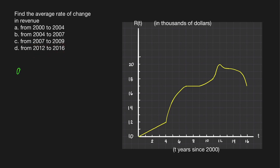Let's find the revenue from 2000 to 2004. Finding average rate of change is the same thing as finding the slope of a secant line — a line that passes through at least two points. Since we're considering 2000 to 2004, we have these two points: year 2000 and year 2004. The average rate of change is the slope of the line that passes through these two points, so we only need to use the slope formula.